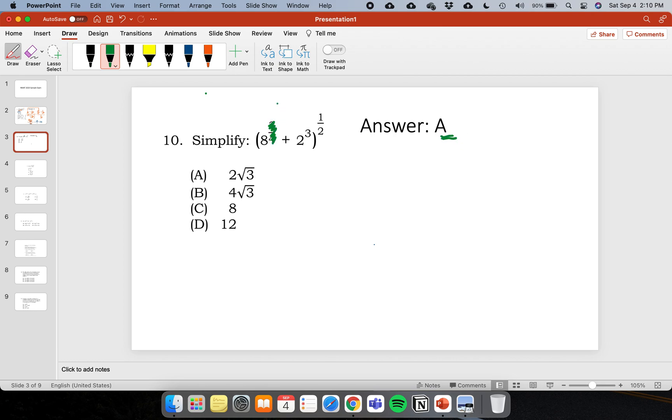This should be 2 thirds. Okay, so the solution here will look like this. 8 to 2 thirds plus 2 raised to 3 raised to 1 half.